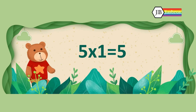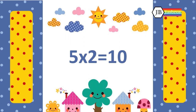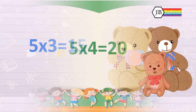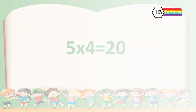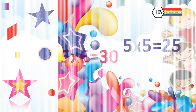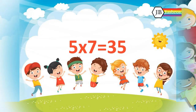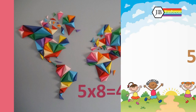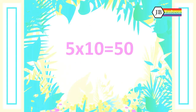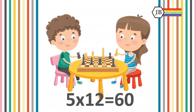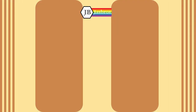Five ones is five. Five twos is ten. Five threes is fifteen. Five fours is twenty. Five fives is twenty-five. Five sixes is thirty. Five sevens is thirty-five. Five eights is forty. Five nines is forty-five. Five tens is fifty. Five elevens is fifty-five. Five twelves is sixty.